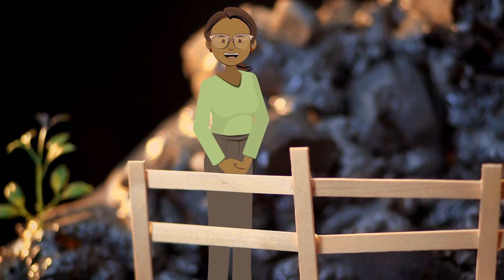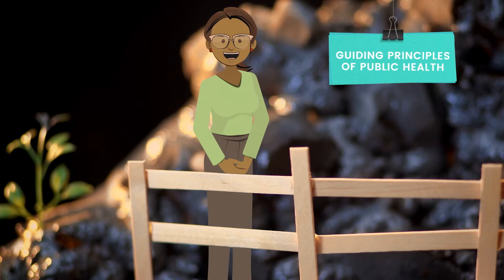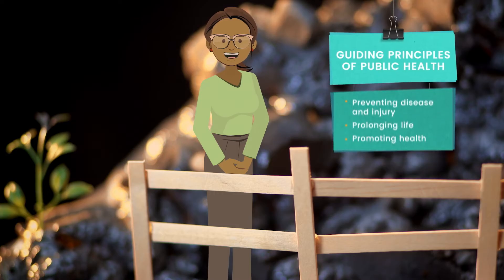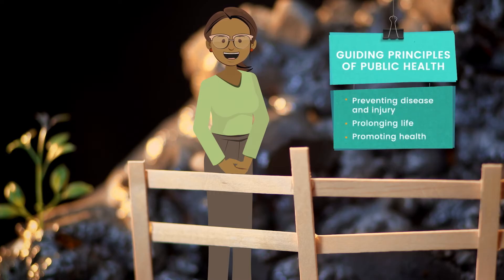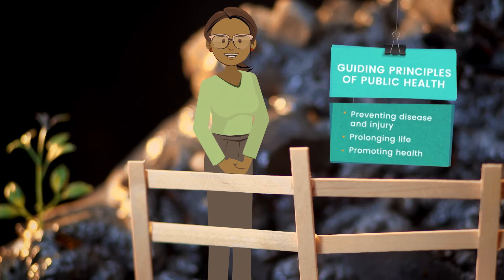When addressing violence prevention, CDC embraces the guiding principles of public health — those of preventing disease and injury, prolonging life, and promoting health. Keeping this in mind, we will now explore CDC's systematic, four-step public health approach to violence prevention.